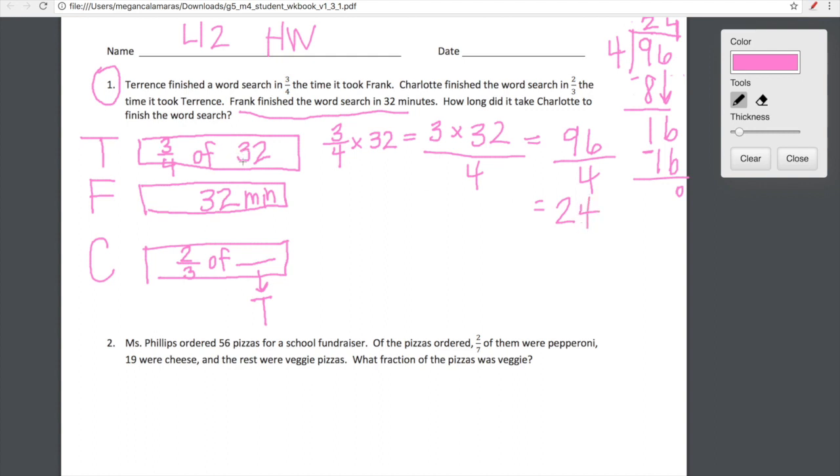Move forward by bringing down your six. Now we ask yourself, how many fours go into 16? Well, four fours go into 16. Four times four is 16. Our difference there is zero. So 96 divided by four is equal to 24. So Terrence read for 24 minutes.